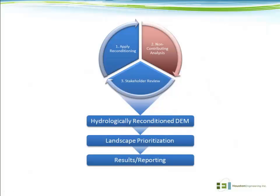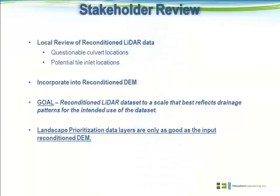Once the non-contributing analysis is complete, the next step in the flowchart is the stakeholder review. This is a step we try to incorporate in all of our reconditioning projects, recognizing that despite expertise in GIS processing and terrain analysis, there is extreme value in having a local practitioner review the results to make sure they reflect what they actually see on the landscape on a day-to-day basis. We go through one iteration of the reconditioning along with the non-contributing analysis, flag areas we think are questionable for them to review, and ask for an overall review of flow paths and drainage divides to make sure they align with what's been observed in the field.